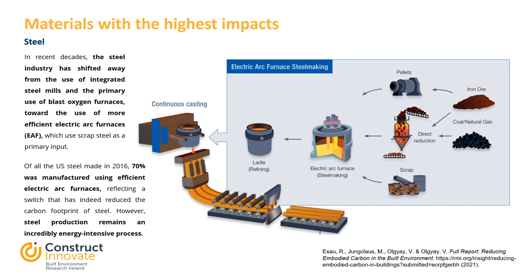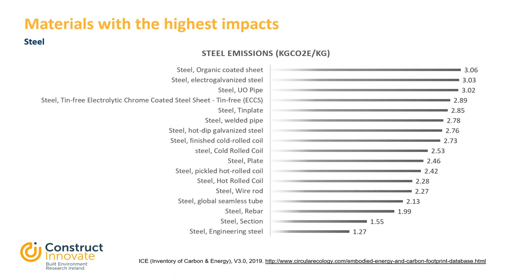However, steel production remains an incredibly energy-intensive process. To highlight the variation in embodied emissions associated with steel, using data from the ICE — the Inventory of Carbon and Energy — organic coated steel has emissions of just over 3 kg of CO2 per kg of steel produced. At the other end, engineering steel is as low as 1.27 kg of CO2e per kg. It is important to use the right values depending on the type of steel employed within a project.